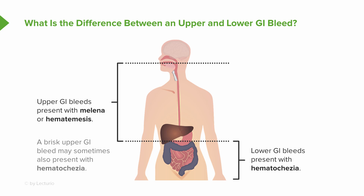Keep in mind, however, that a very quick upper GI bleed may also sometimes present with hematochezia if the bleeding is occurring fast enough.